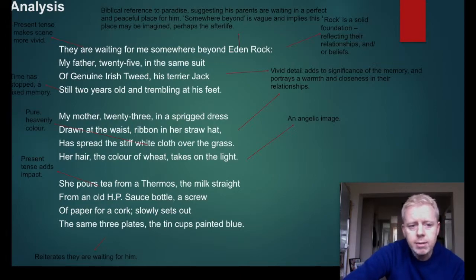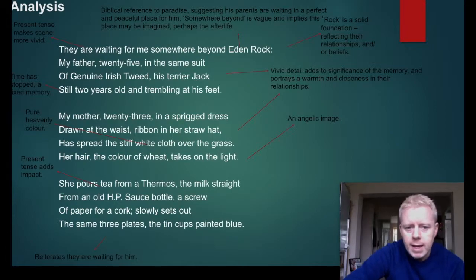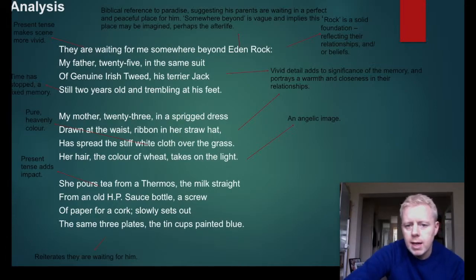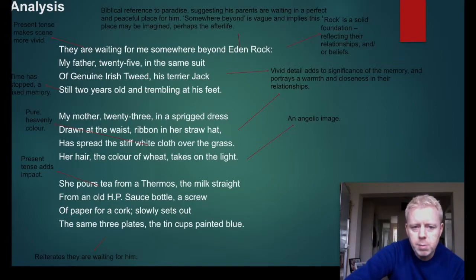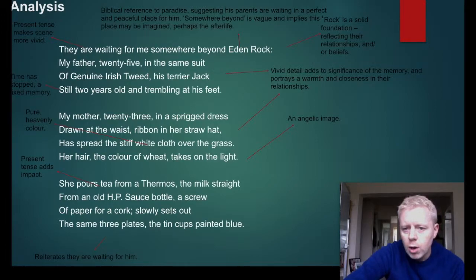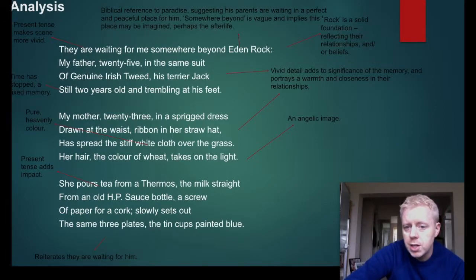The poem uses present tense — 'they are waiting' — which makes the scene more vivid. Eden Rock is a biblical reference to Paradise, the Garden of Eden, suggesting his parents are waiting in a perfect and peaceful place for him. 'Somewhere beyond' is vague and implies this place may be imagined, perhaps the afterlife. 'Rock' is a solid foundation reflecting their relationship and/or beliefs, perhaps.